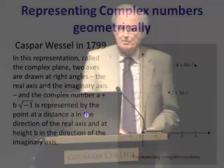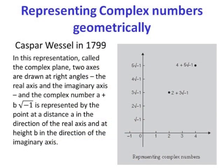There is also a useful geometric interpretation: in the complex plane, two axes are drawn at right angles — the real axis (horizontal) and the imaginary axis (vertical). The complex number a + bi is represented by the point at distance a in the real direction and b in the imaginary direction. The core rules remain the rules for adding and multiplying pairs of real numbers.